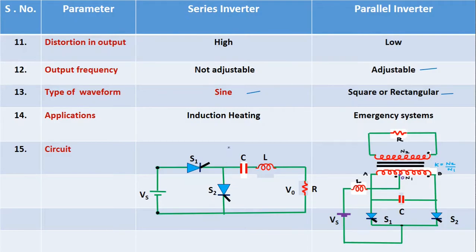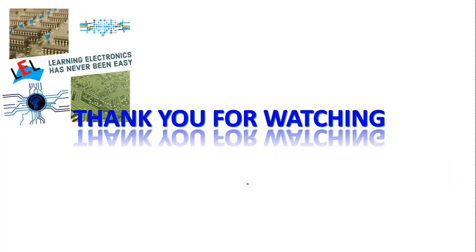Fifteenth is comparison of circuit diagrams. This is the circuit diagram of series inverter and this is the circuit diagram of parallel inverter. Here you can see we are using two SCRs, but the commutating components L and C are connected in series with the load, whereas in the parallel inverter the commutating capacitor is connected effectively in parallel with the load through a center tap transformer, and here also we are using two SCRs. These are the comparisons of the series inverter and parallel inverter. Hope you understood the topic. Thank you very much for watching, please do subscribe my channel for more updates.